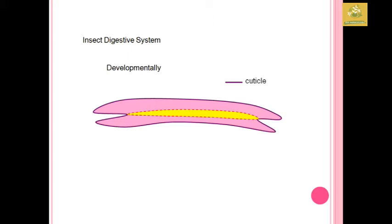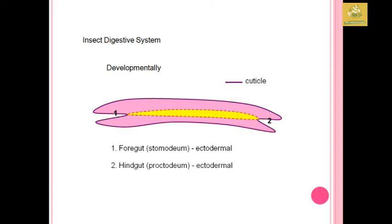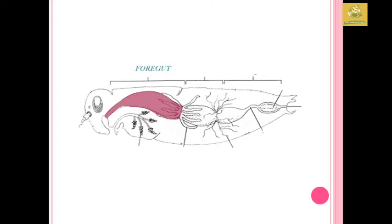Developmentally, the three regions are classified as follows: the foregut, also known as stomodeum, which is ectodermal in nature; the hindgut, also known as proctodeum, which is also ectodermal in nature; and the midgut, also known as mesenteron, which is endodermal in nature. The foregut connects the mouth to the midgut, the midgut connects the foregut and hindgut, and the hindgut connects from the midgut to the anus.